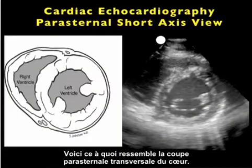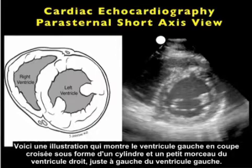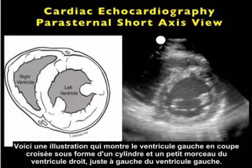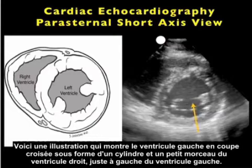Here's what the views from the parasternal short axis plane of the heart will look like. We see a pictorial showing the left ventricle cut in cross section as a cylinder, and the right ventricle as a little sliver just to the left of the left ventricle.